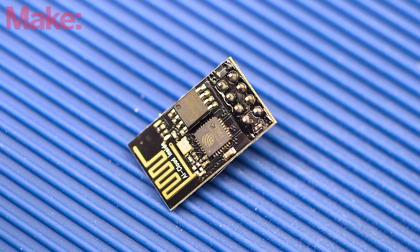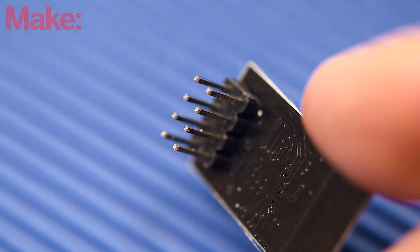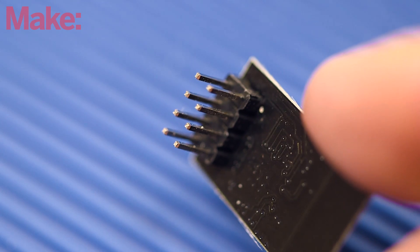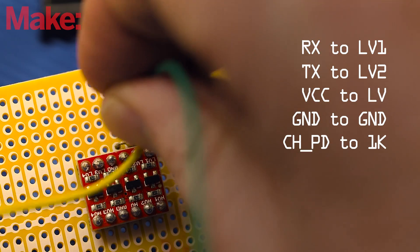The ESP8266 runs its default firmware on this project, so there's no need to reprogram it. You will need to wire it, however. Using jumpers, connect the pins of the ESP8266 to the logic-level converter using this on-screen guide.